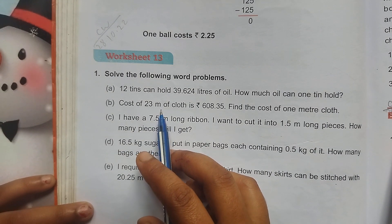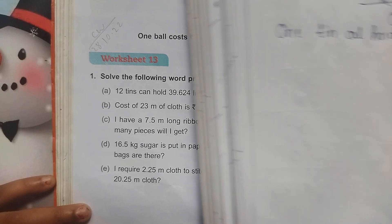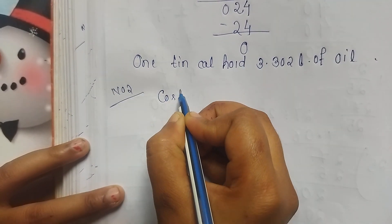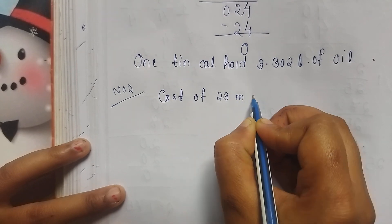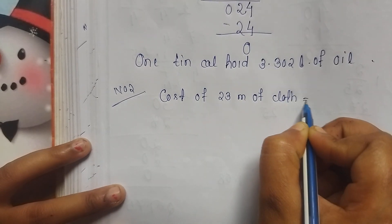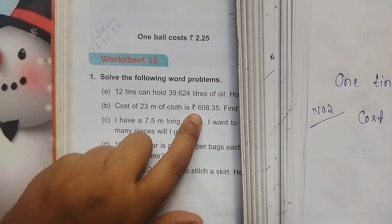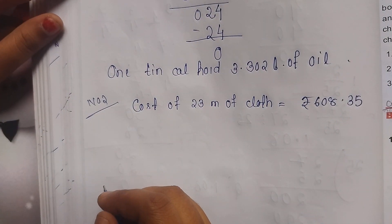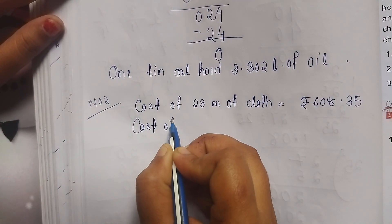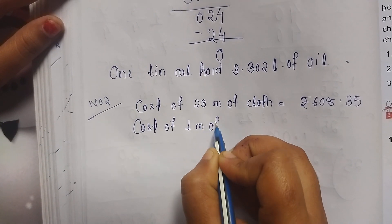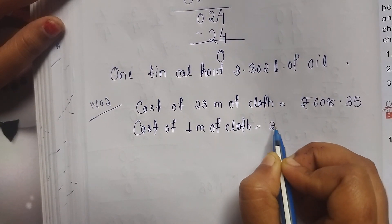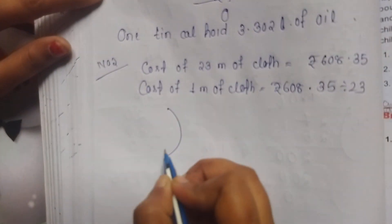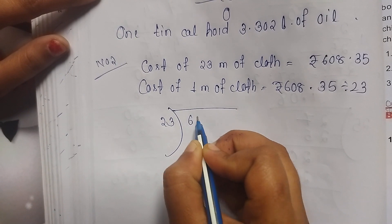Cost of 23 metres of cloth is 608.35 rupees. So cost of 1 metre of cloth equals 608.35 divided by 23.